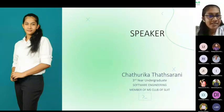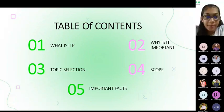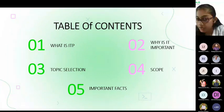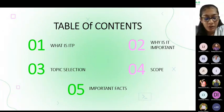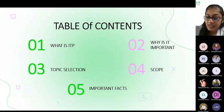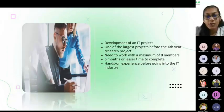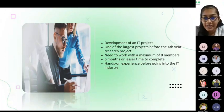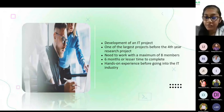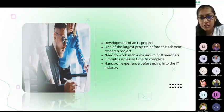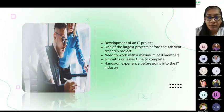Let's see what content I'm going to discuss today. I'm going to discuss what is ITP and why it is important, topic selection for ITP and scope for that, and additionally I'm going to give you some important things to consider when you are completing your project. So what is ITP? You already know that this is a module you'll be getting in your second year second semester. This is very important because you will get four credits for this module, and this is one of the largest projects before your fourth year research project.